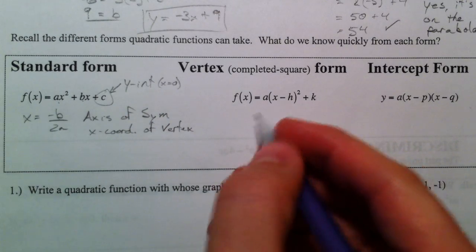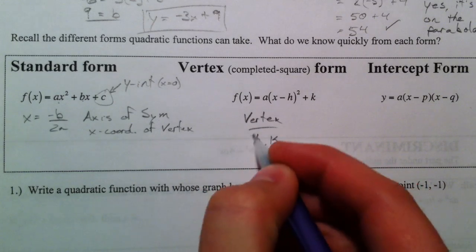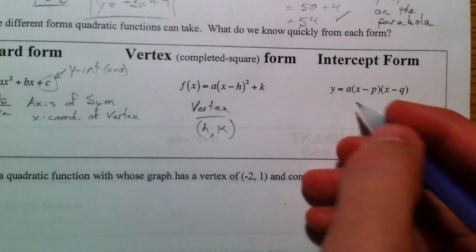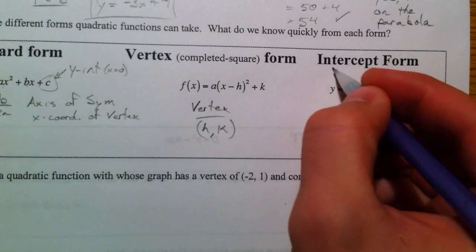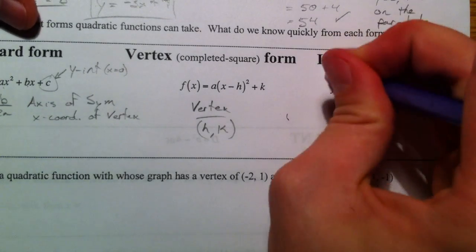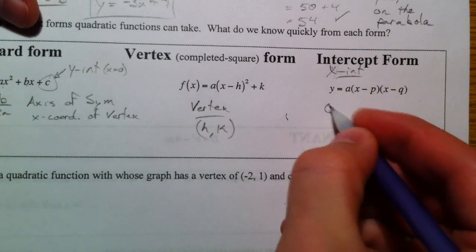Vertex form, what was nice about that is the vertex was h, k. And in intercept form, that was not y-intercept, sorry, x-intercept form, because y equals 0.